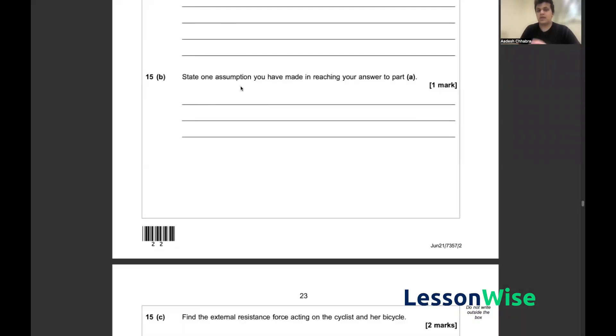In part (b), we have to state one assumption we have made to reach our answer in part (a). Essentially, one main answer is that we assume the rod will always stay horizontal and there's no vector component that's going to be added to it. So an assumption like 'the rod stays horizontal' is perfectly valid for this question.